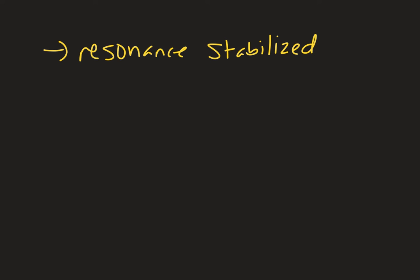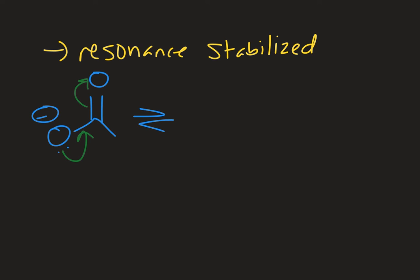Another common technique is to protonate the leaving group so that it then becomes neutral upon leaving. Other common good leaving groups are those that are resonance stabilized. Whenever the charge can be shared over more than one atom, that increases the stability of that molecule. For example, this oxygen can share electron density throughout the pi system so that the charge is spread out over two oxygen atoms as opposed to being localized on one.